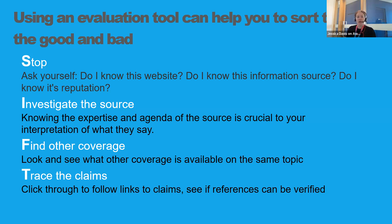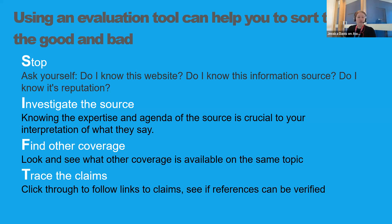Then you move on to Investigate the source, where you ask about the expertise and agenda of the source. You would look at the author's credentials — sometimes that is more obvious than others. Maybe they have their credentials listed on the article, or maybe you might have to do a quick Google search to find out who the author is and where they get their expertise from, if they have done a course or if they're an academic or an expert in the field. It's also important to know the agenda — can you detect any biases when reading the resource? Then look to see if you can Find other coverage: if you find other articles about the same topic, are those articles saying the same thing or claiming a different result than the original article?